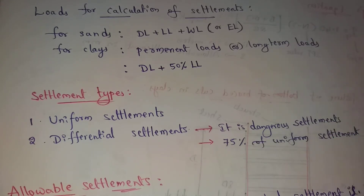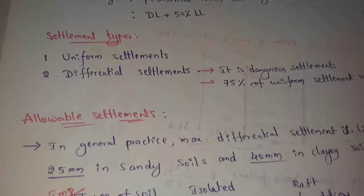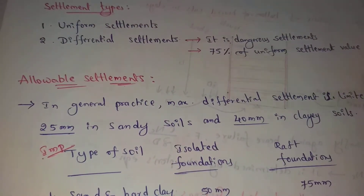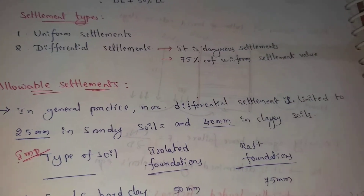In uniform settlement, 75% is considered a dangerous settlement. Next, allowable settlements. In general practice, maximum differential settlement is limited.